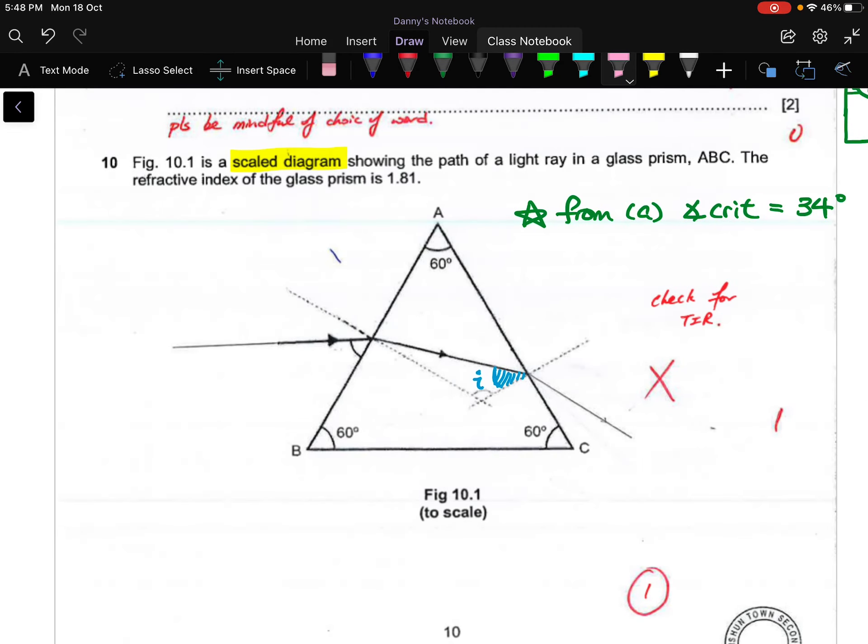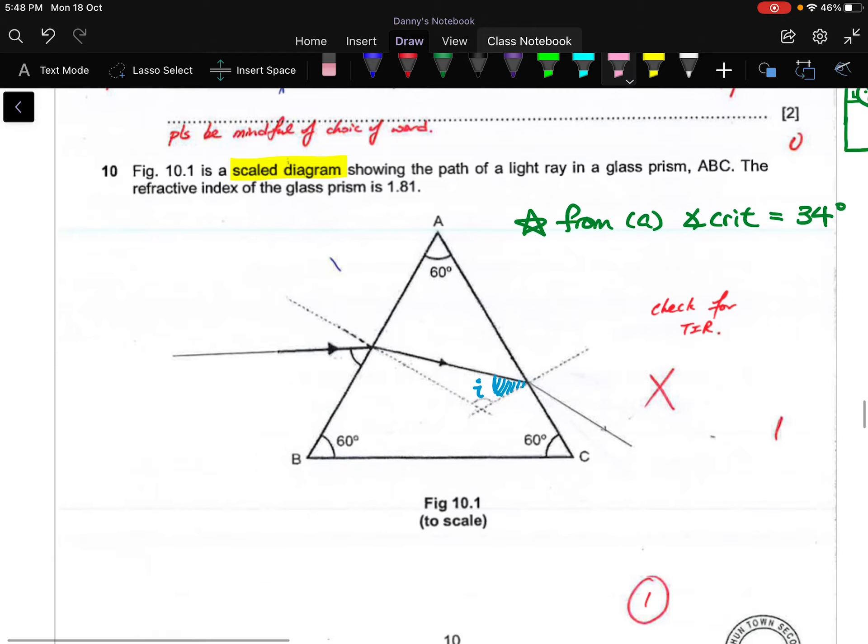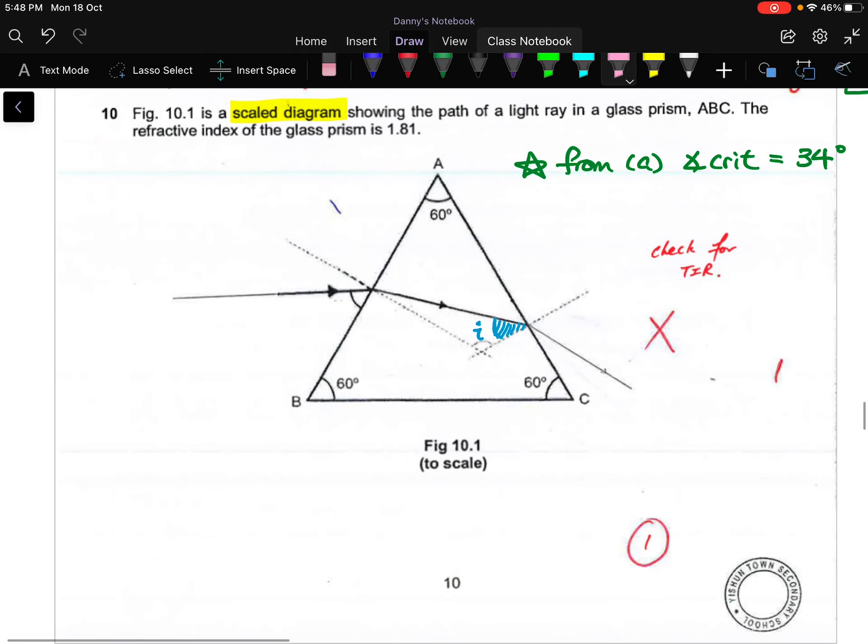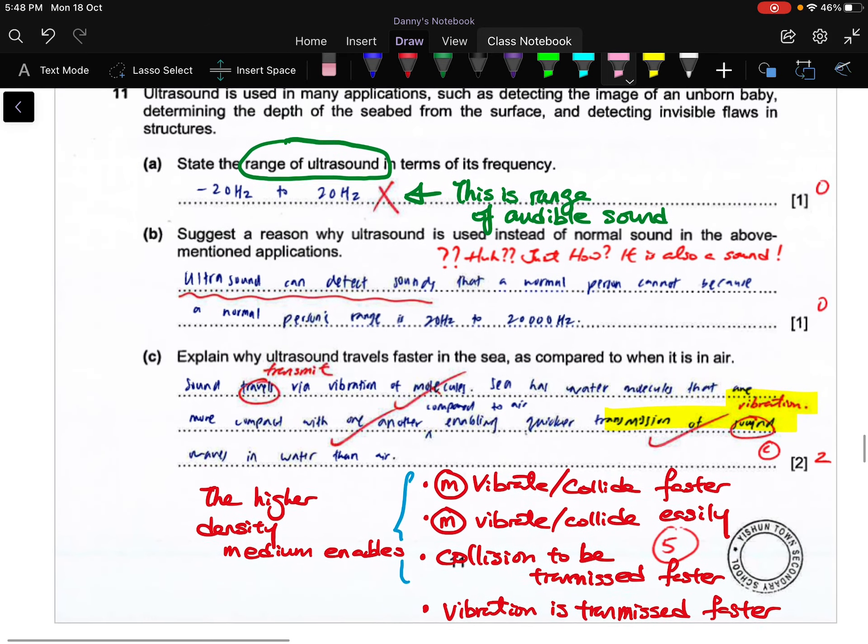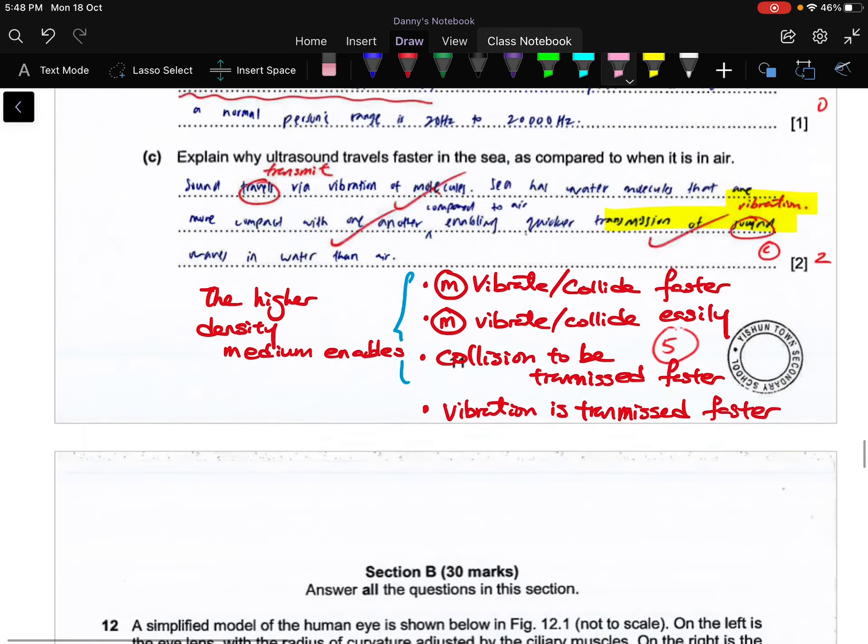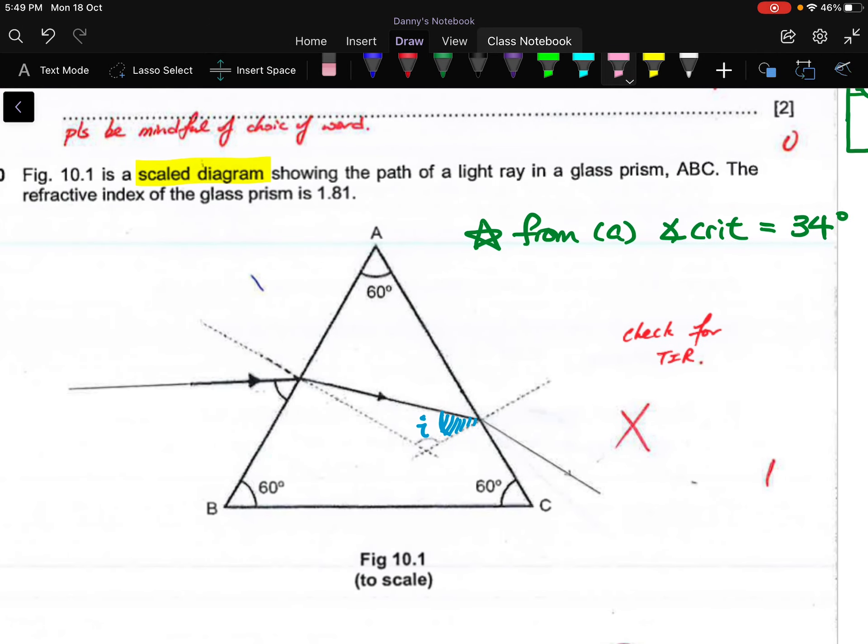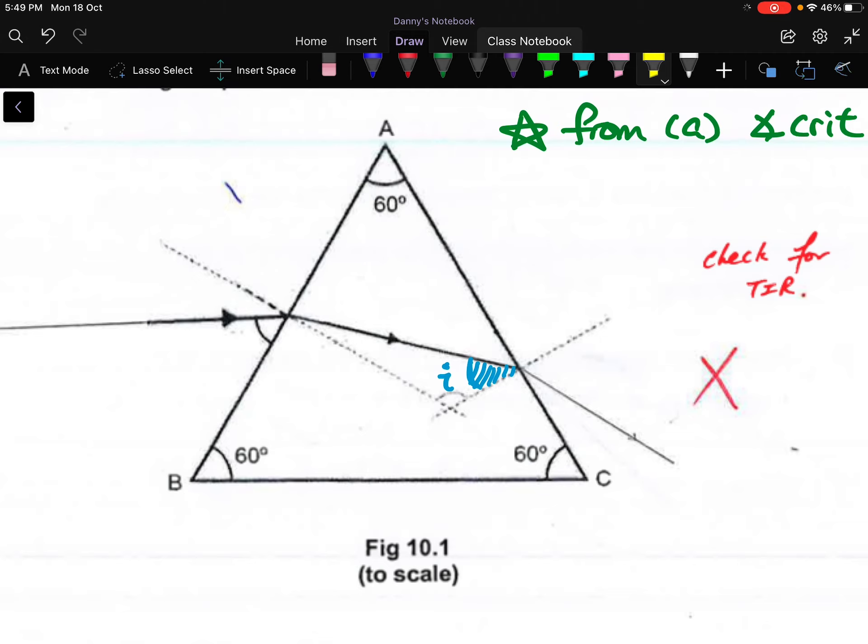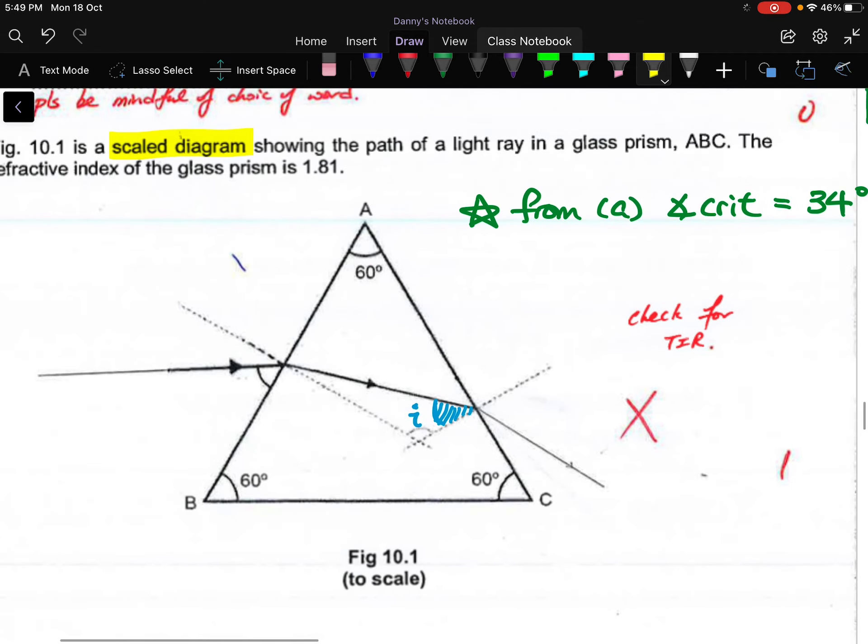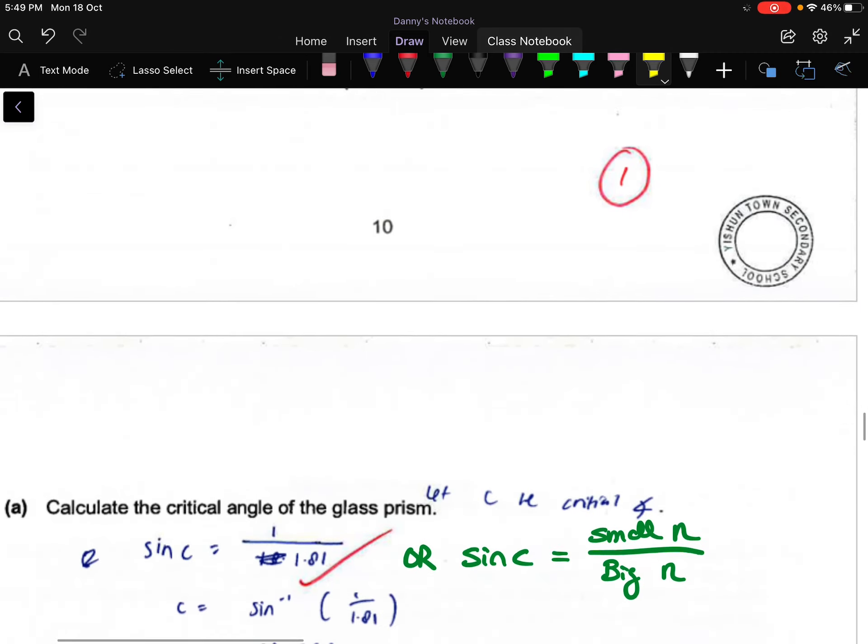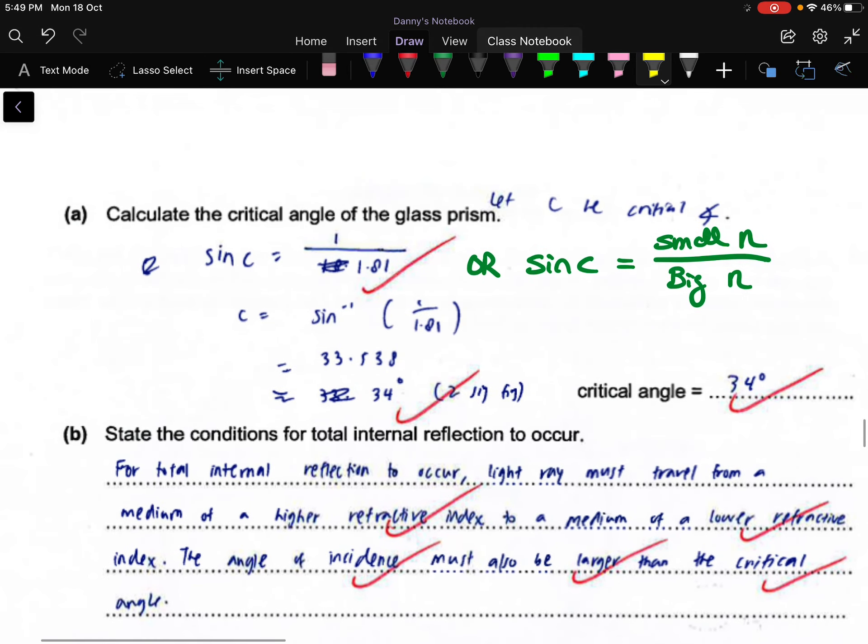We will carry on going through the 3E Pure Physics end of year 2021 paper. This video will cover question 10 and question 11. For question 10, we are checking whether you are aware of what is incident angle, critical angle, TIR, and of course the application of Snell's law. You need to notice that this diagram is actually scaled, meaning you can get most of the parameters directly by using a protractor.